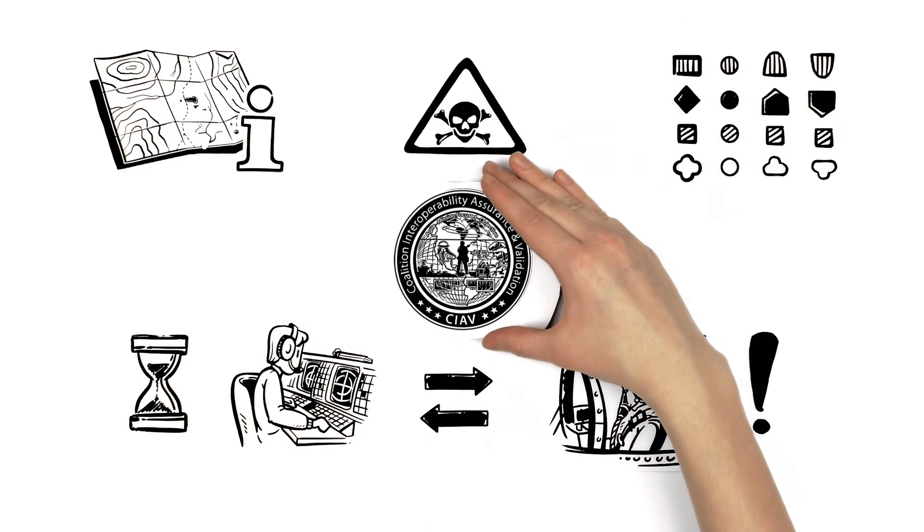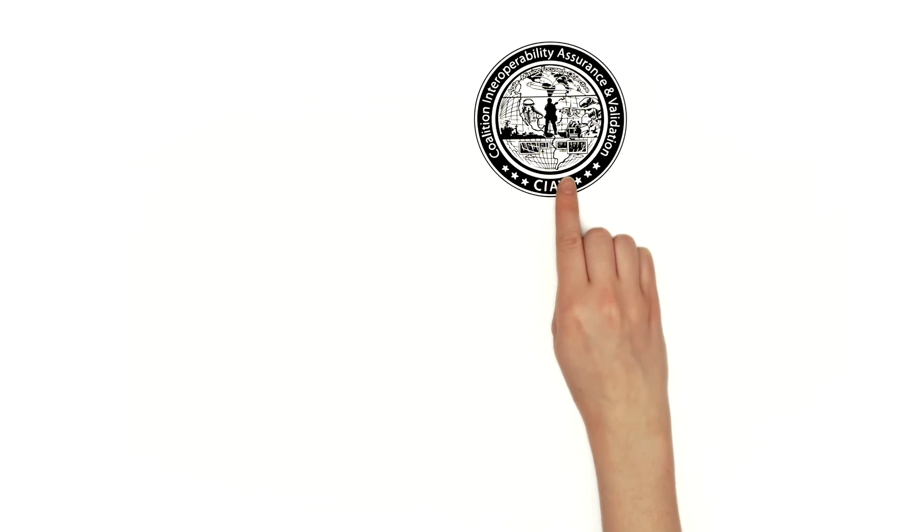That's where KIEV comes into the equation. KIEV is Coalition Interoperability Assurance and Validation.